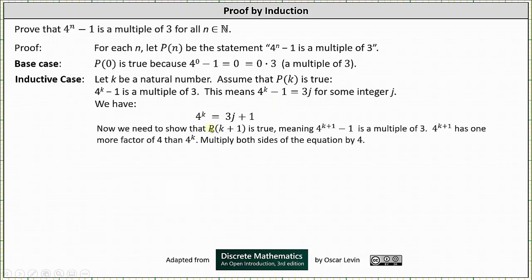We need to show that P(k+1) is true, meaning four to the power of k plus one minus one is a multiple of three. Four to the power of k plus one has one more factor of four than four to the power of k, so our next step is to multiply both sides of the equation by four. On the left side, four to the power of k times four equals four to the power of k plus one. On the right side, distributing four gives us 12j plus four.